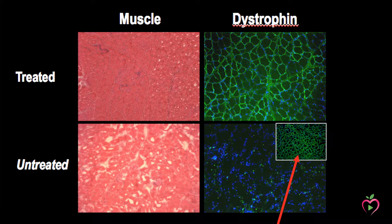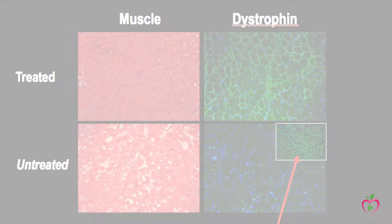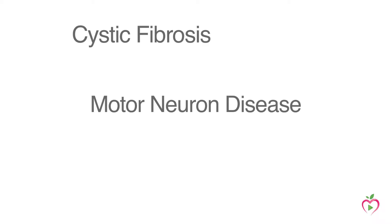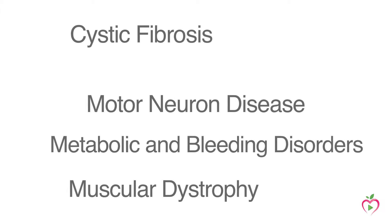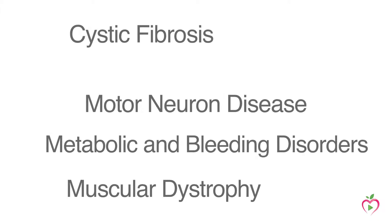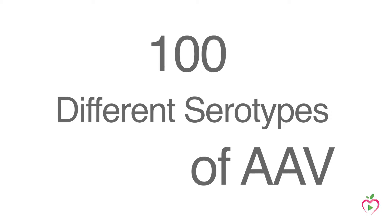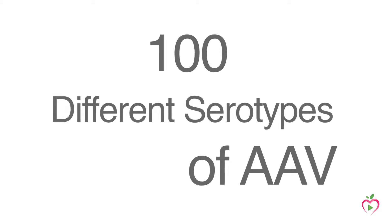Defective genes are known to cause serious and fatal diseases in every organ system — cystic fibrosis, motor neuron disease, muscular dystrophy, metabolic and bleeding disorders, immune deficiencies, and many more. More than 100 serotypes of the AAV can shuttle normal genes to all these locations to replace the inactive gene products.